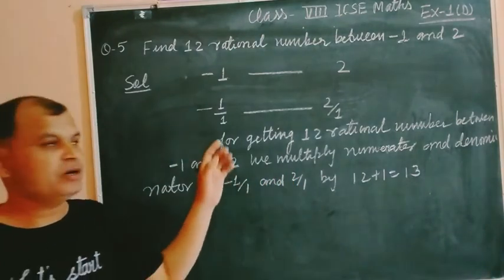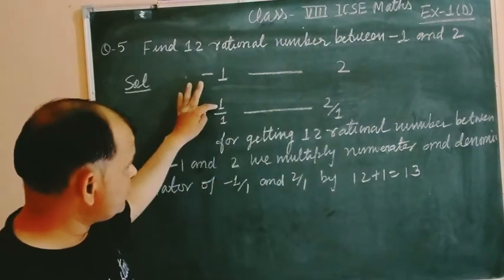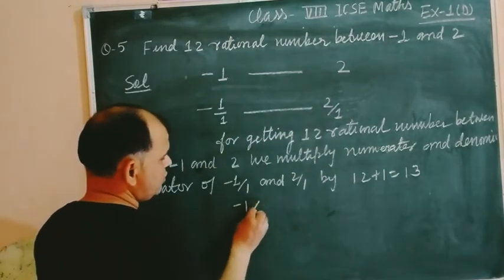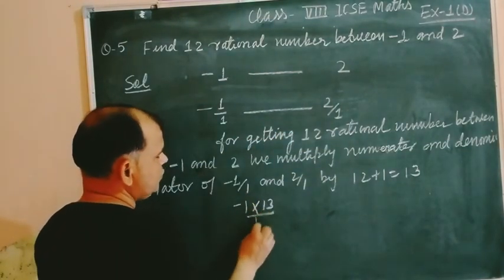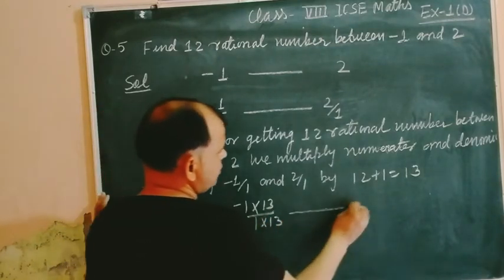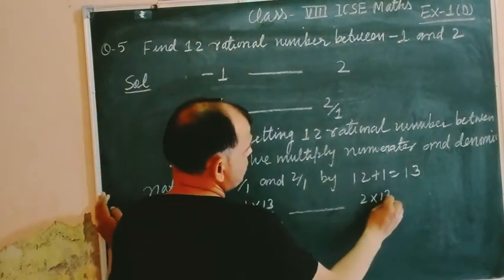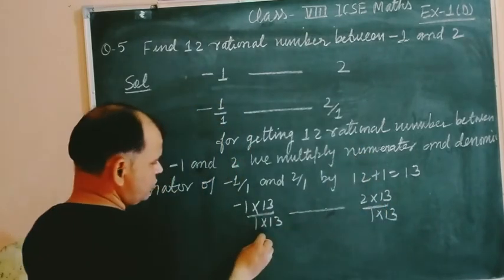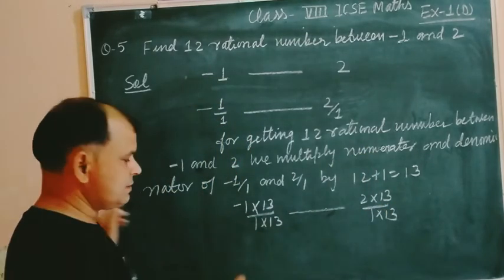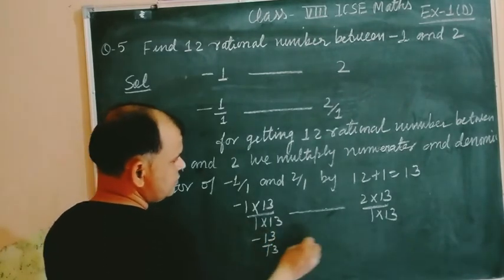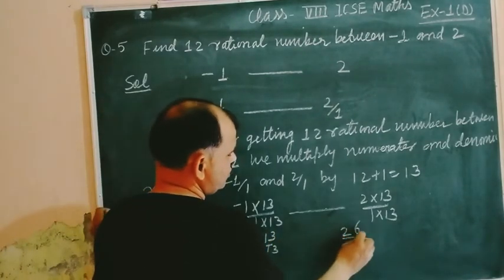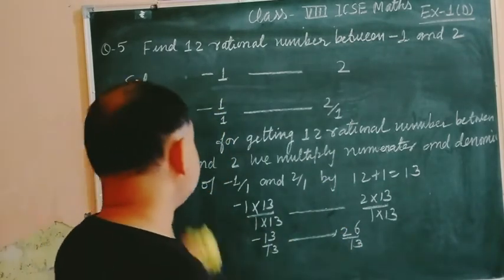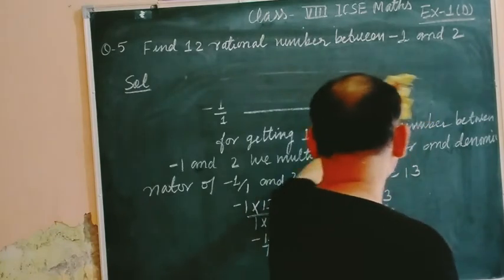By 13 we multiply the numerator of this and also the denominator of this. Here we get minus 1 into 13 over 1 into 13 and 2 into 13 over 1 into 13. We got minus 13 over 13 and this is 26 over 13. Now we can easily find the required numbers.